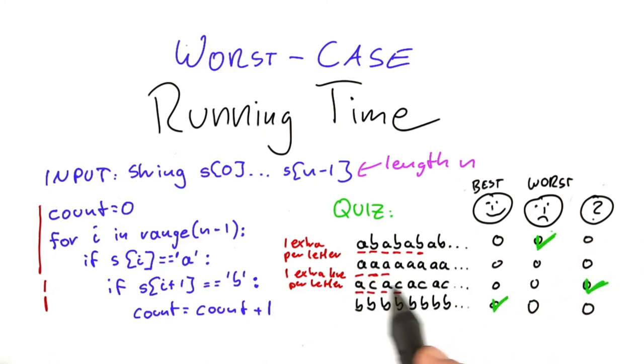But surprisingly, also this one down here, although it doesn't contain the sequence A, B at all, is also a worst case input.